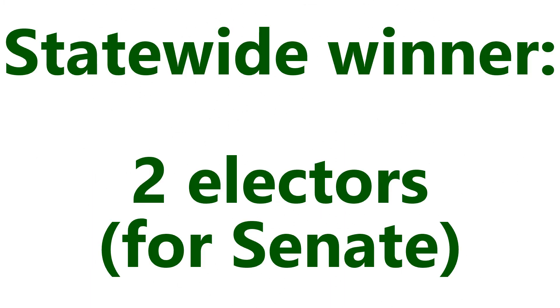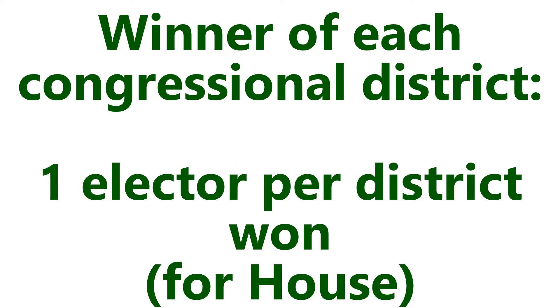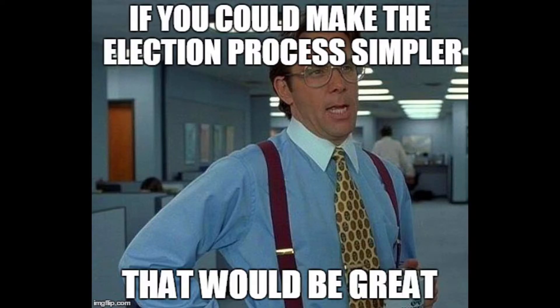Basically, the statewide winner gets two electors to represent the Senate, while the winner of each congressional district gets an elector for each district won to represent the House of Representatives. Hey, don't blame me — I didn't make these rules.